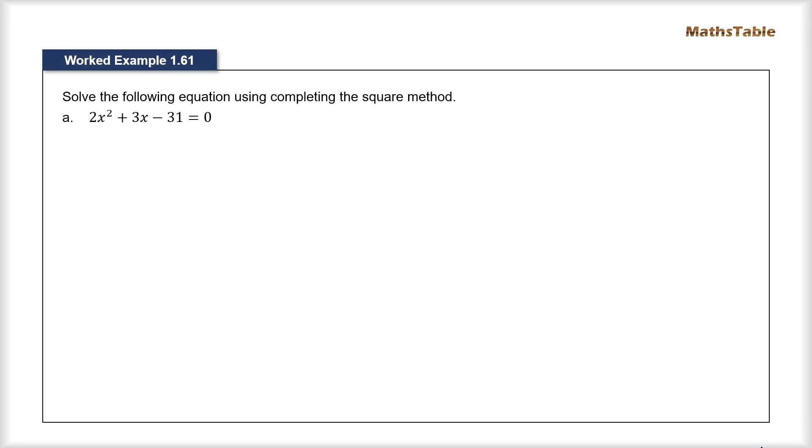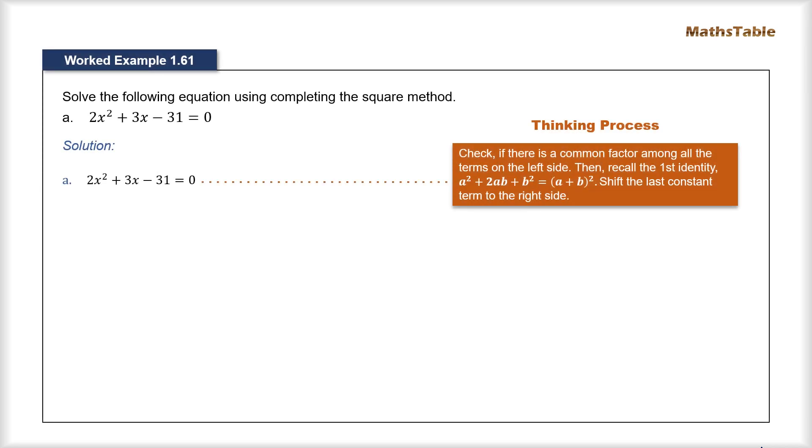Now let's solve this equation using completing the square method. Now as always the first step is to check whether there is a highest common factor among all the terms in the expression on the left side. So here we can see that there is no highest common factor. So we will directly proceed towards the second step.